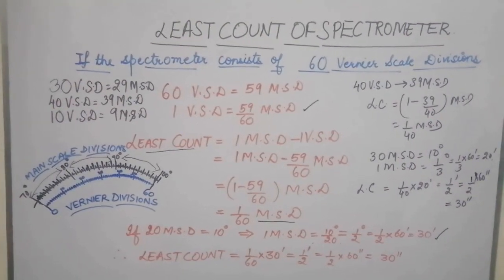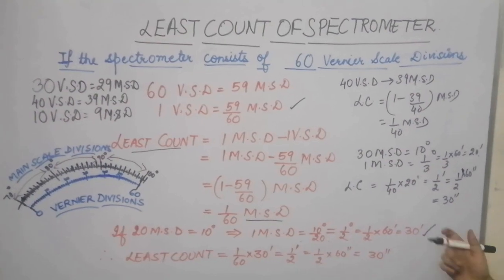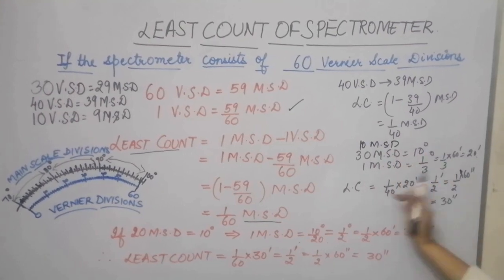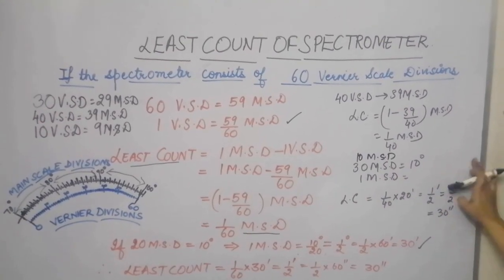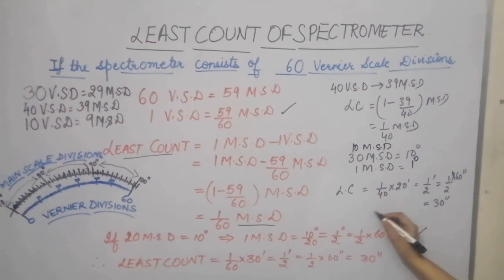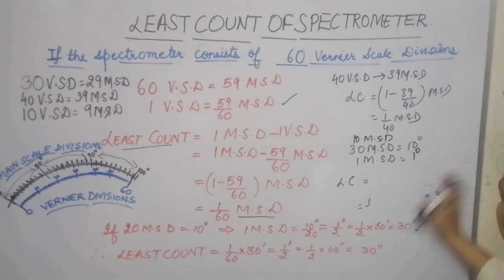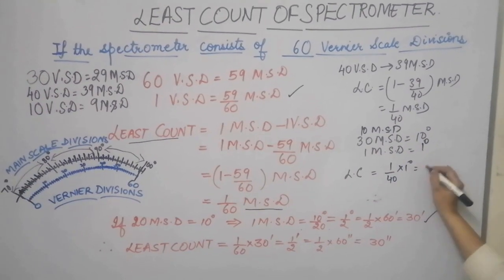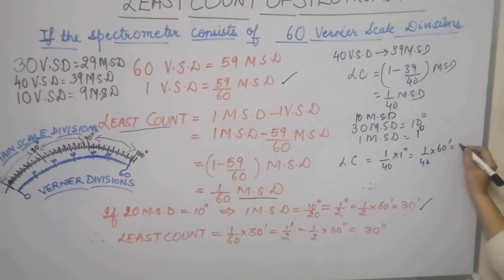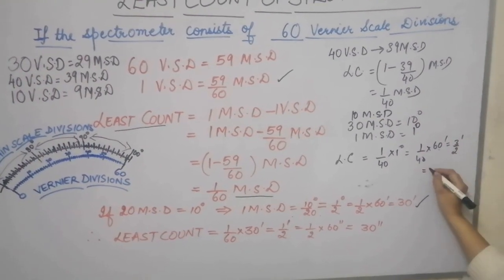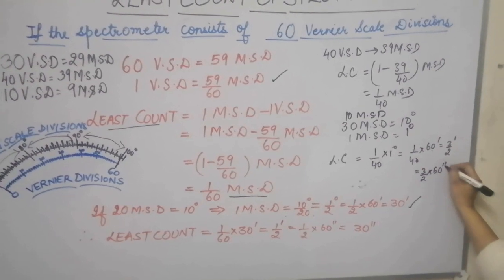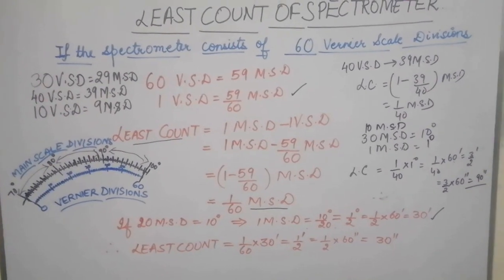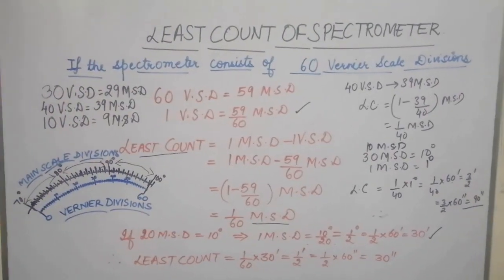For another example, if 10 main scale divisions equal 10 degrees, then 1 MSD = 1 degree. With 40 vernier scale divisions, least count = 1/40 × 1 degree = 1/40 × 60 minutes = 3/2 minutes = 90 seconds. So depending on the spectrometer's configuration, you calculate the least count accordingly.